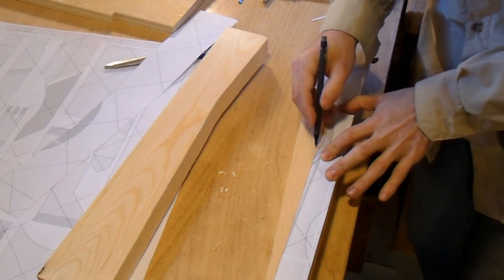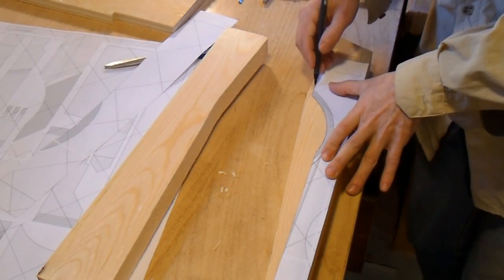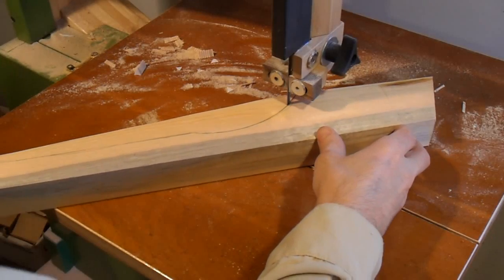Here's tracing the outline for one of the parts that forms the back of the machine, and cutting it out with a bandsaw.